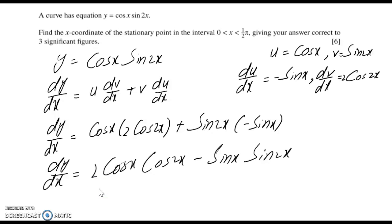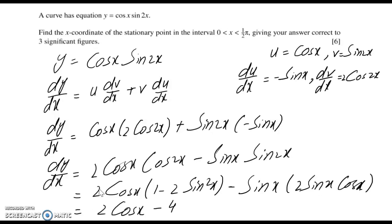We can simplify this using double angle identities. For cos 2x there are three different identities; let's use 1 - 2sin²x. And sin 2x can be converted to 2sin x cos x. Simplifying this gives us 2 cos x - 4sin²x cos x - 2sin²x cos x.